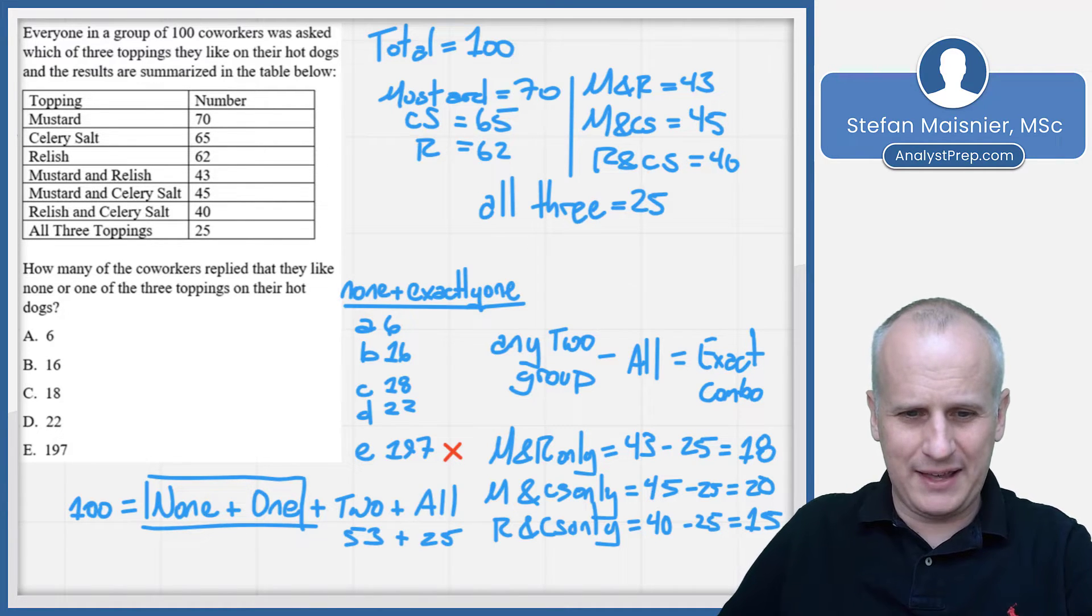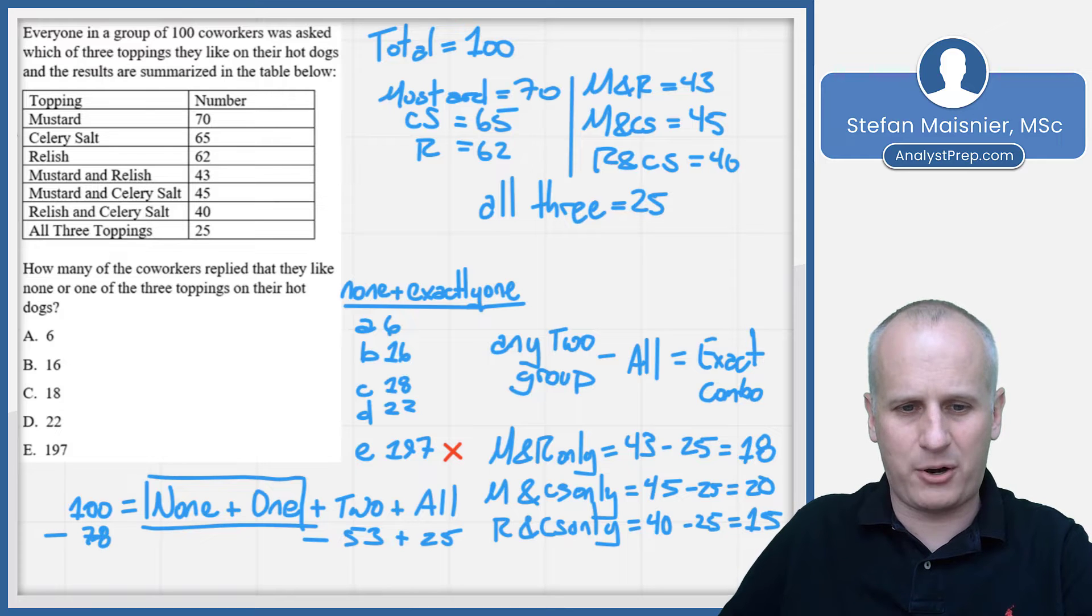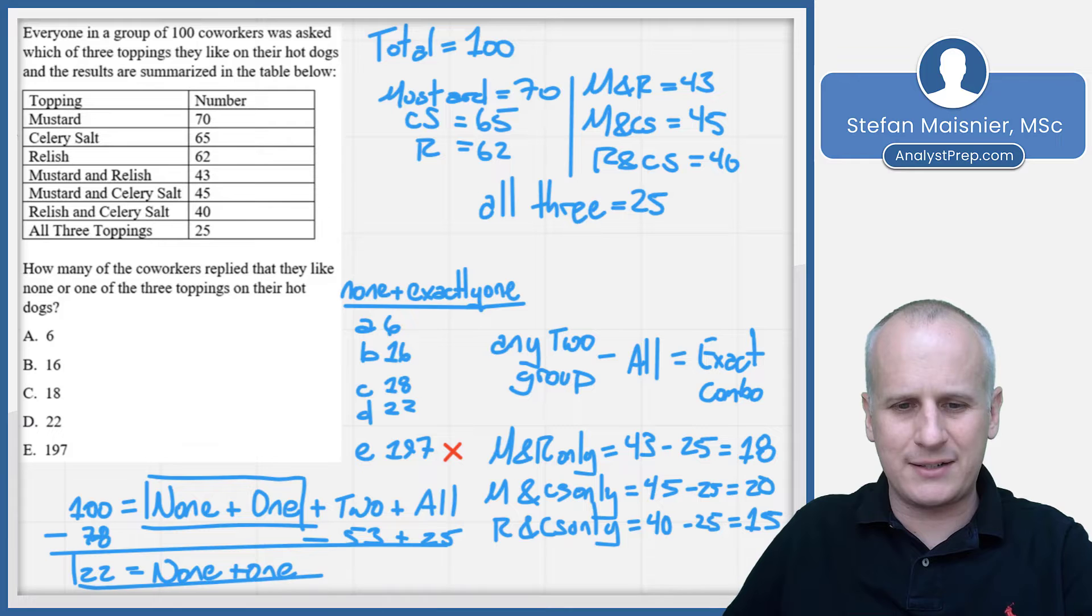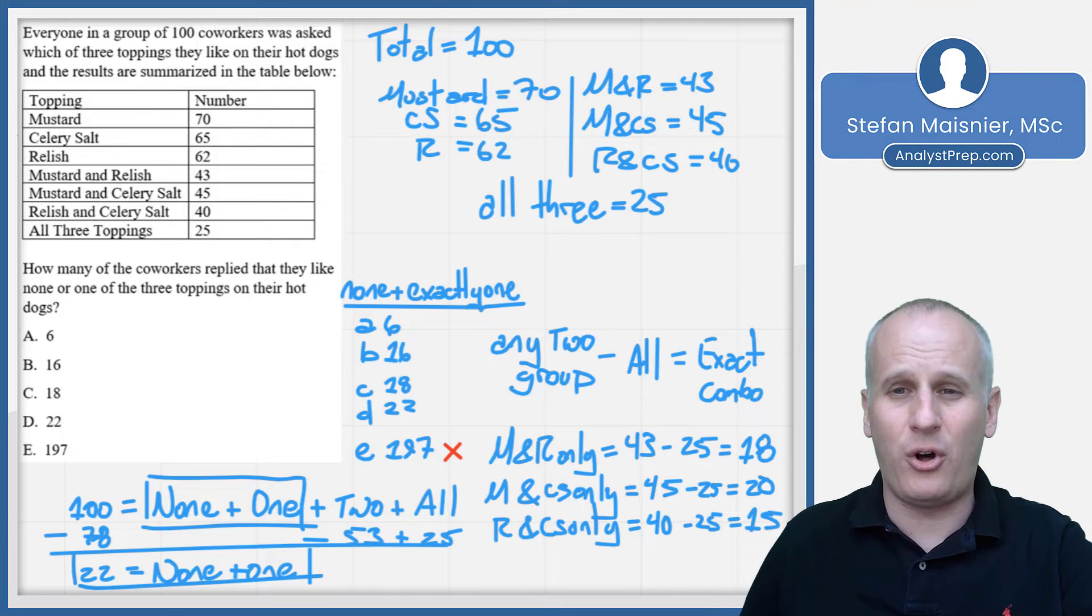So that means if we just subtract out, that's going to be 53 plus 20 is 73. 73 plus 5 is 78. I could subtract out 78 from our 100. And we discover that 22 is equal to our none plus one as a direct solution without having to build all of the different pieces. And we can pick D confidently and relatively efficiently, even though that table looks probably a bit intimidating to start with.